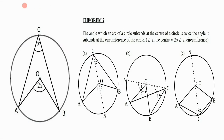In today's lesson we're going to be looking at Theorem 2, which says the angle which an arc of a circle subtends at the center is twice the angle it subtends at the circumference. So angle at center equals two times the angle at the circumference. We can see here angle C at the circumference is x, and angle O at the center is 2x, which confirms the theorem. Today we'll be looking at activities based on this theorem.